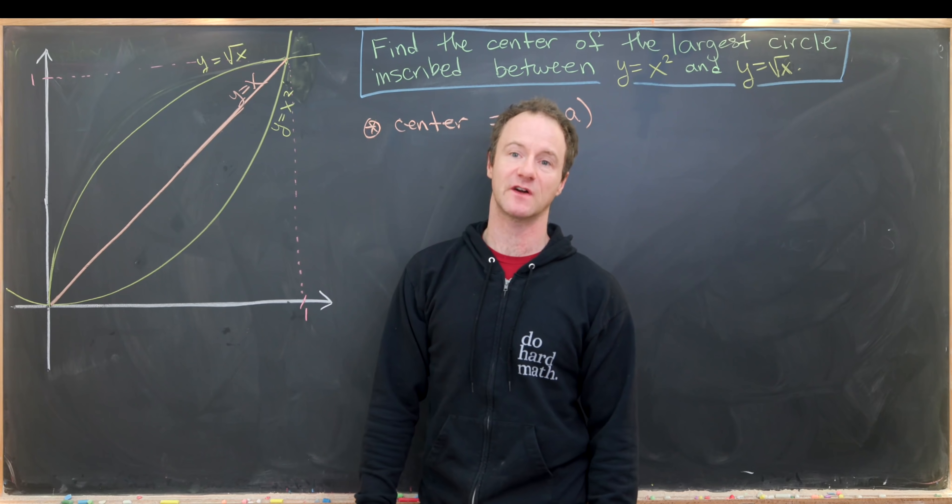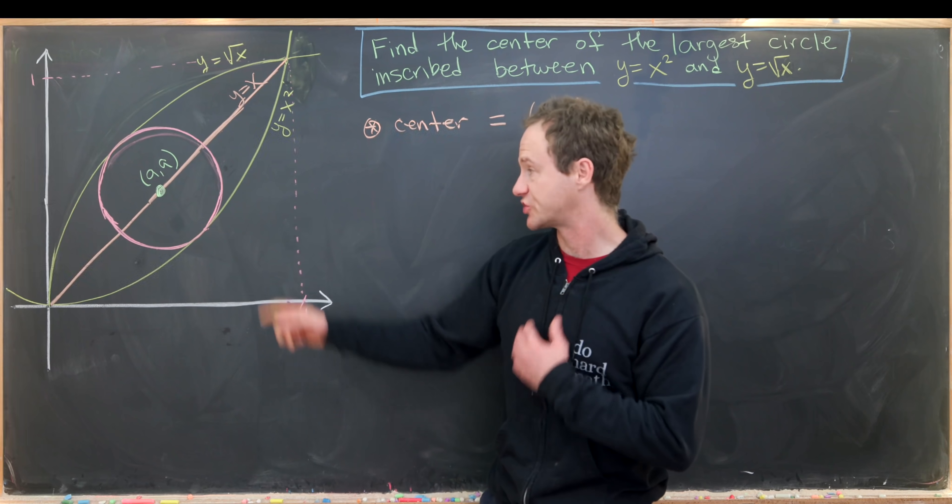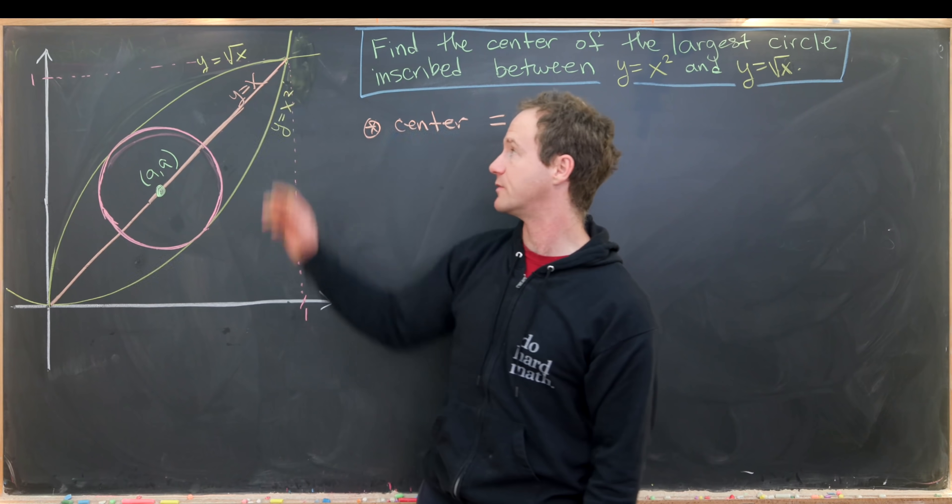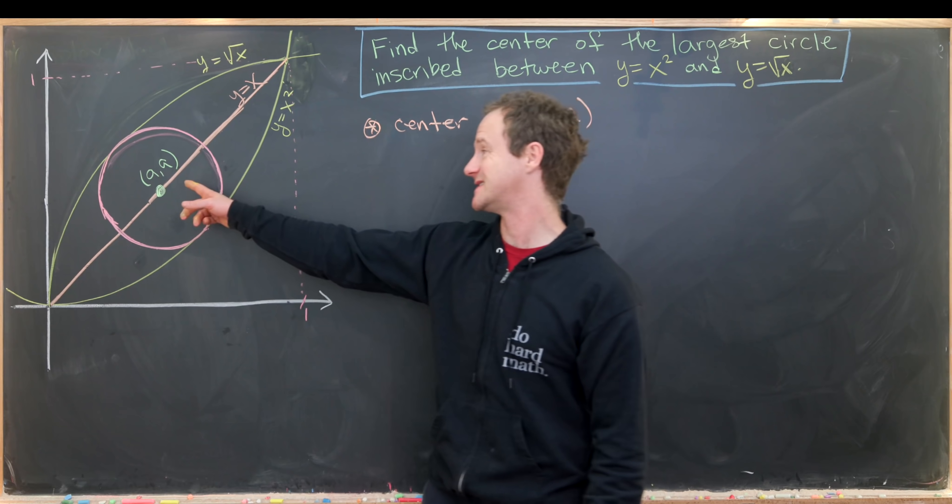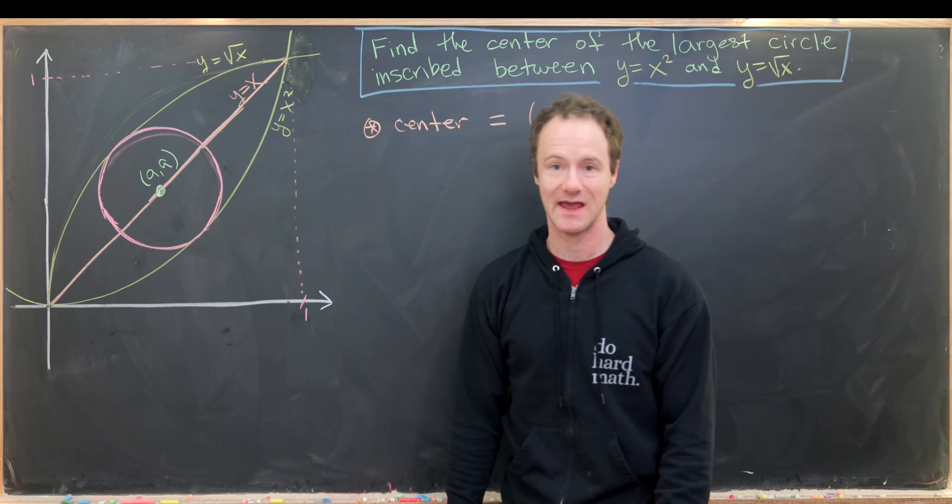Now let's get a picture of our circle and we can start making some measurements. We've got our circle in the picture, inscribed between these two graphs. Its center is on the line y equals x, labeled a comma a.